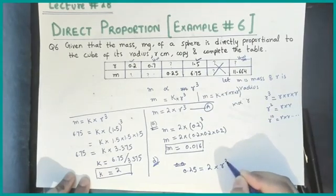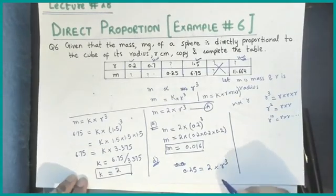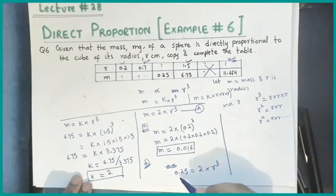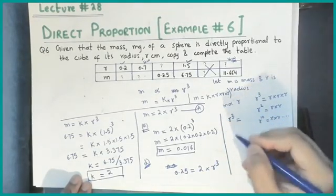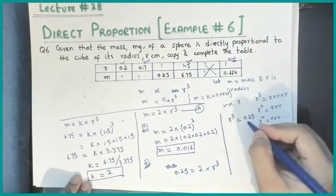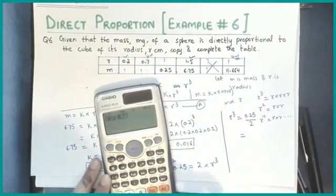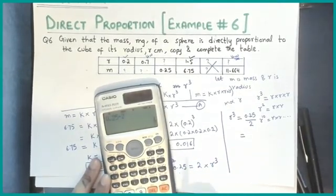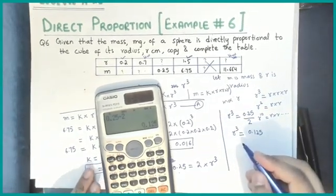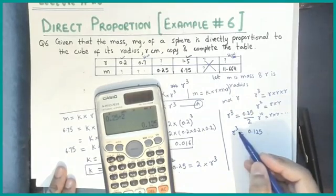M is given as 0.25. So 0.25 equals 2 times r cubed. I want to remove r and isolate it. Since 2 is multiplied with r cubed, when it moves to the other side it becomes divided. So r cubed equals 0.25 divided by 2, which gives r cubed equals 0.125.